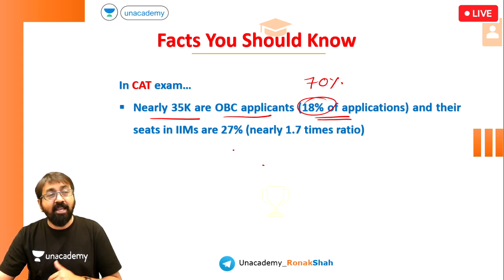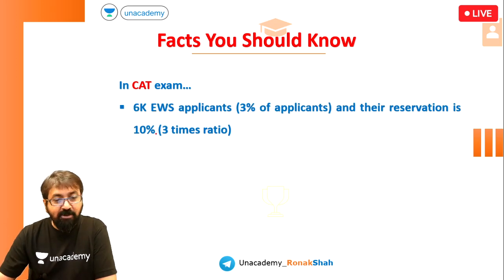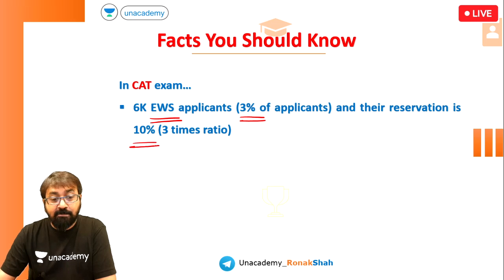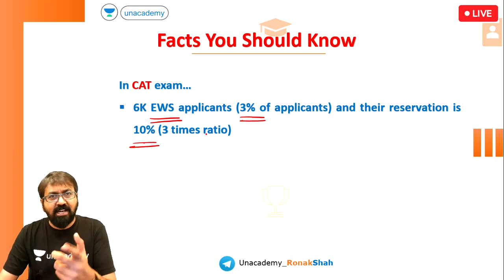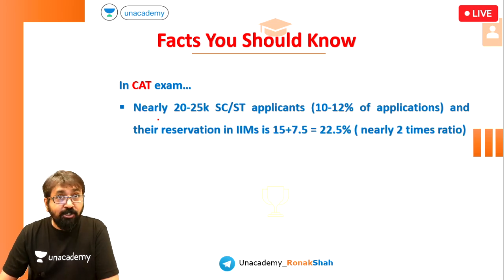Looking at the EWS — Economically Weaker Section — they are almost 3% of total applicants and have 10% reservation. The ratio of 10 divided by 3 is almost close to 3, slightly more than that. So the maximum advantage is with the EWS category. If you are part of that category, you can definitely benefit from that.